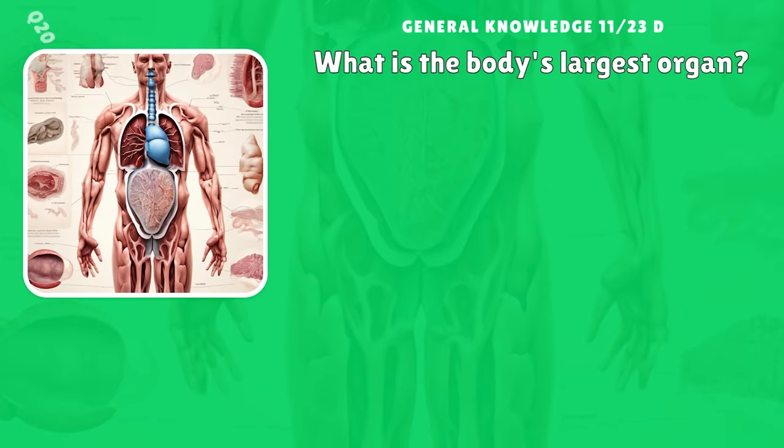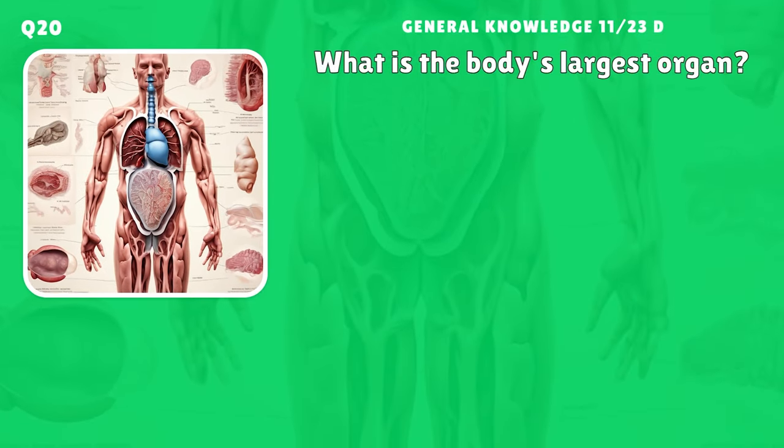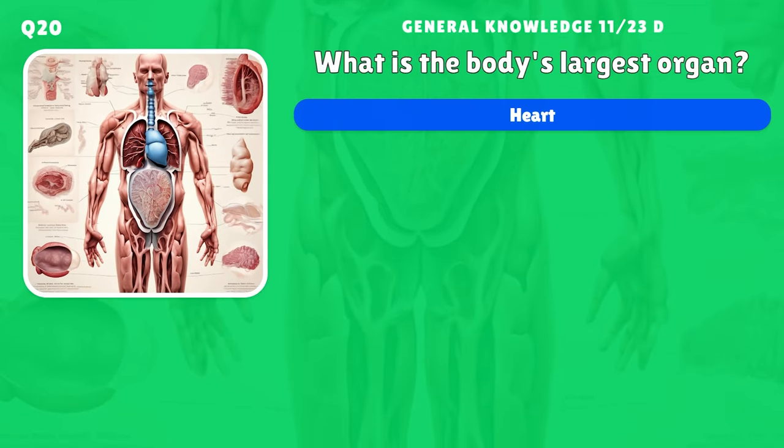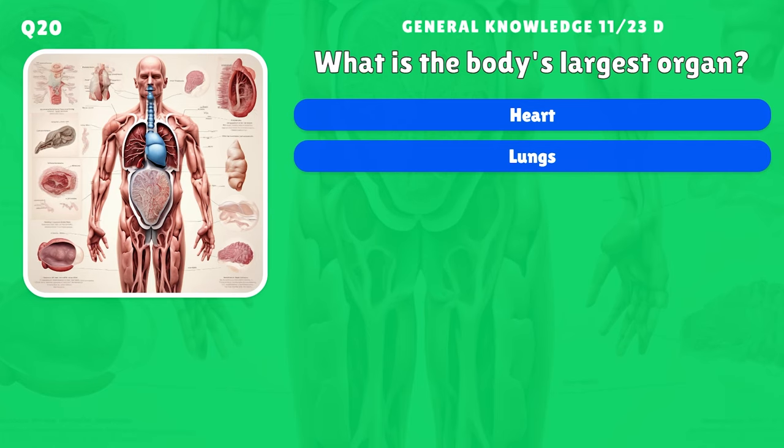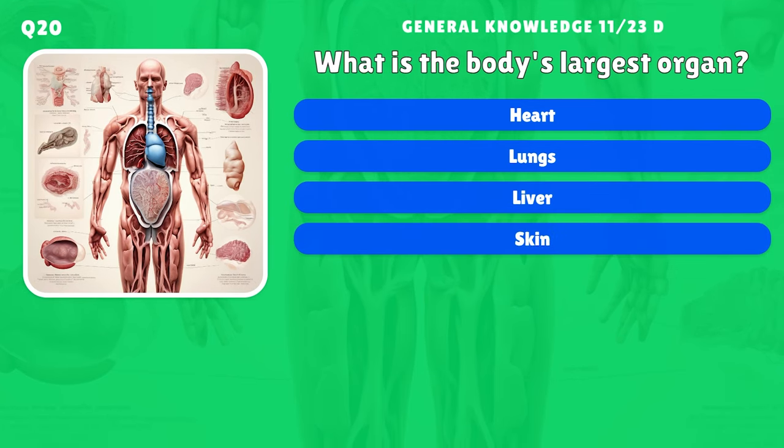What is the body's largest organ? A) Heart, B) Lungs, C) Liver, D) Skin.